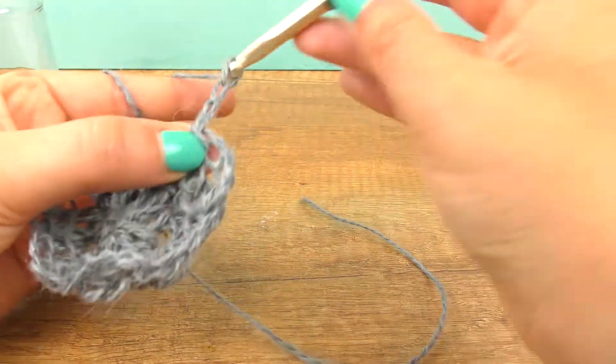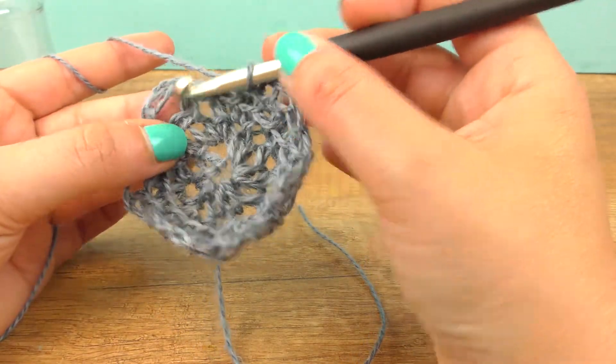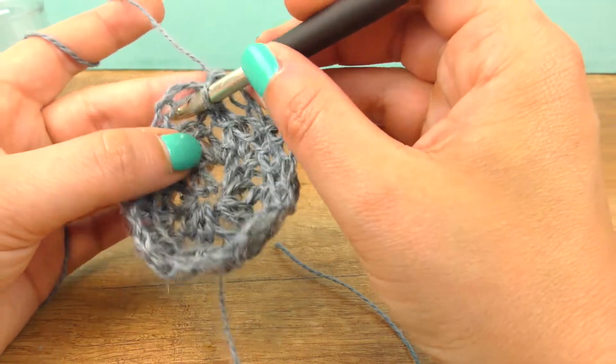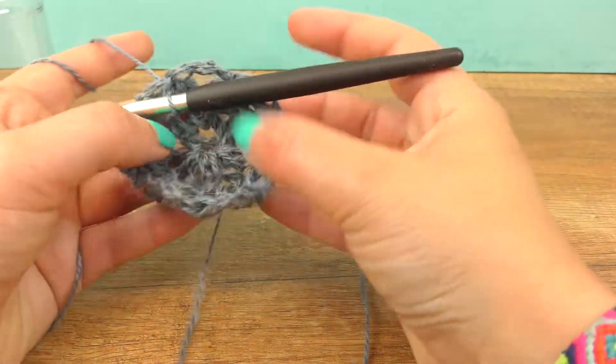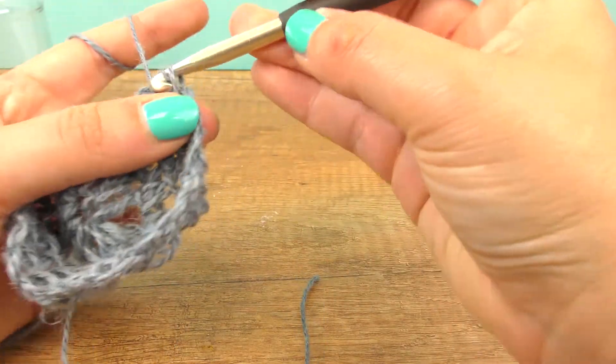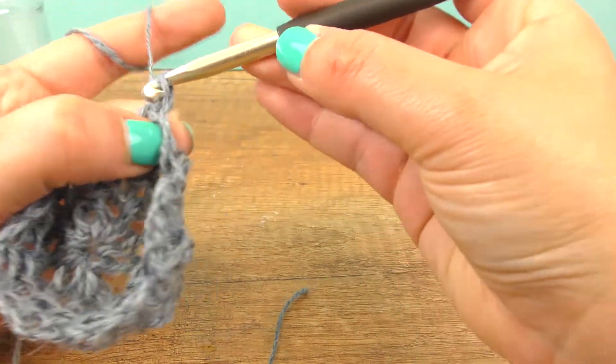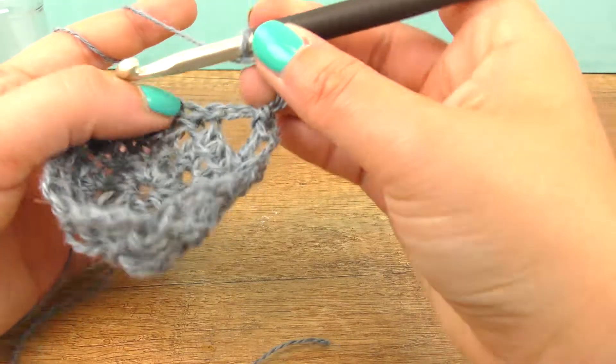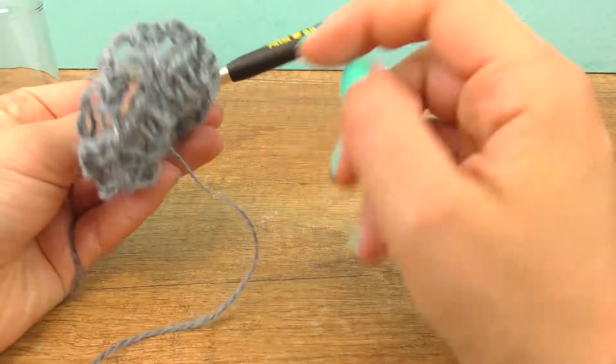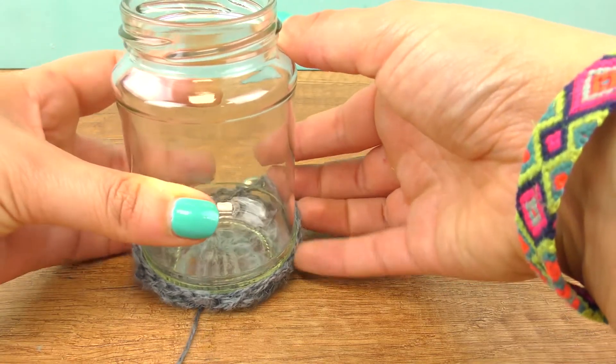So you might notice already that we are getting the shape that we want. Here was our first bow, and now let's do again three chains, and then just go through the loop and continue. So we aren't counting or skipping stitches anymore. Just simply work with the loops that you have.